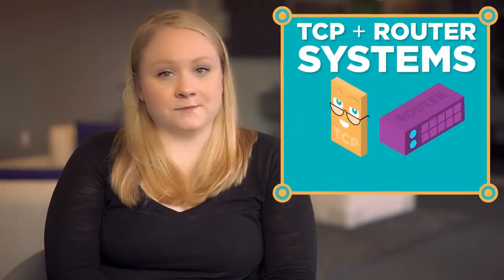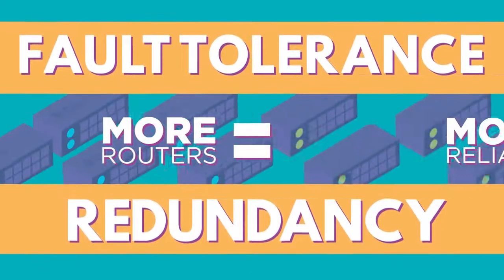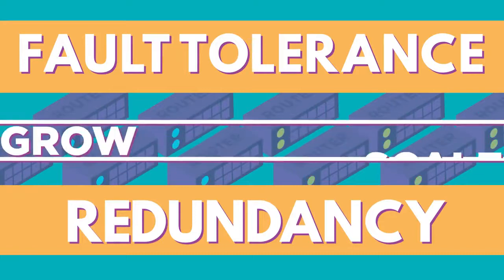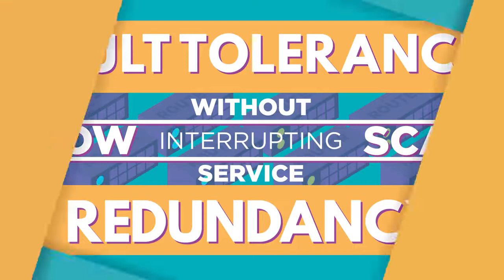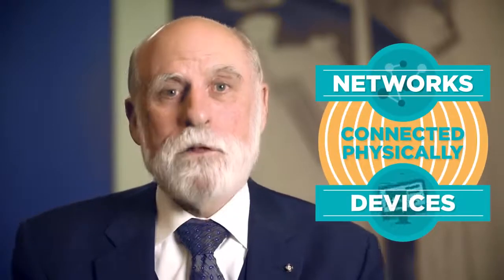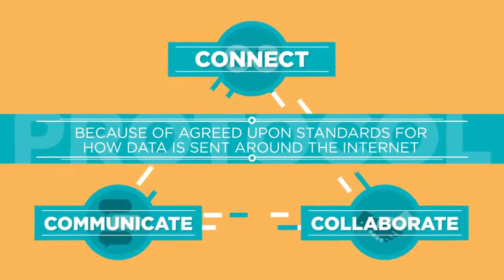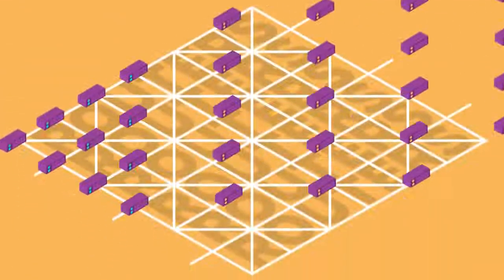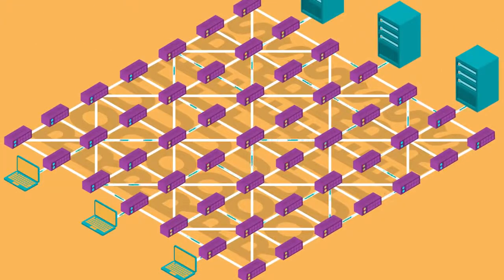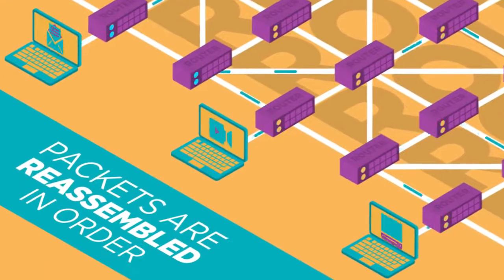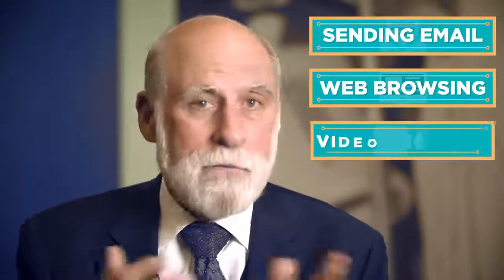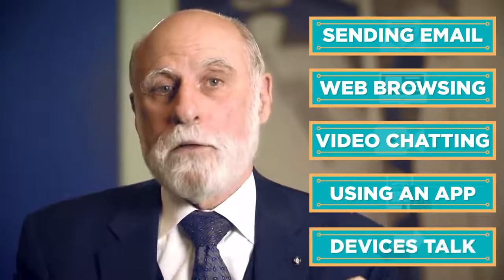What's great about the TCP and router systems is they're scalable. They can work with eight devices or eight billion devices. Because of these principles of fault tolerance and redundancy, the more routers we add, the more reliable the internet becomes. What's also great is we can grow and scale the internet without interrupting service for anybody using it. The internet is made of hundreds of thousands of networks and billions of computers and devices connected physically. These different systems that make up the internet connect to each other, communicate with each other, and work together because of agreed-upon standards for how data is sent around on the internet. Computing devices or routers along the internet help all the packets make their way to the destination where they're reassembled, if necessary, in order. This happens billions of times a day whether you and others are sending an email, visiting a webpage, doing a video chat, using a mobile app, or when sensors or devices on the internet talk to each other.